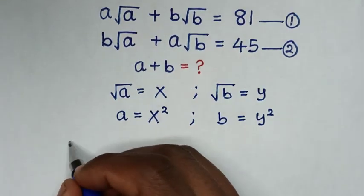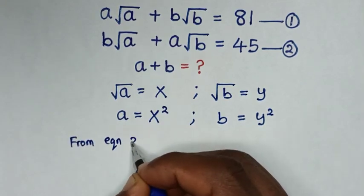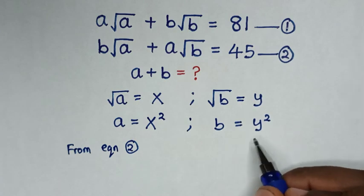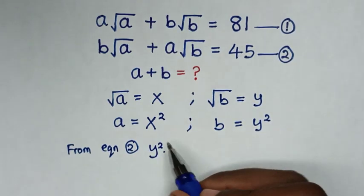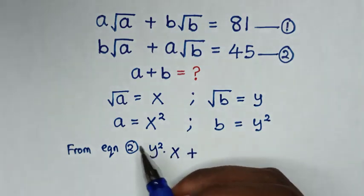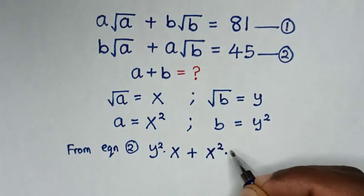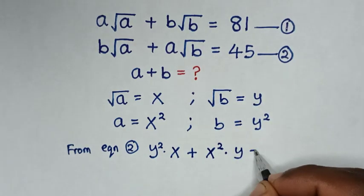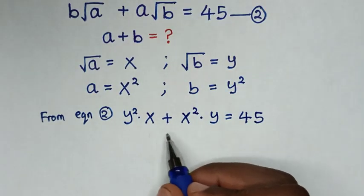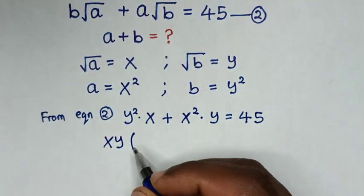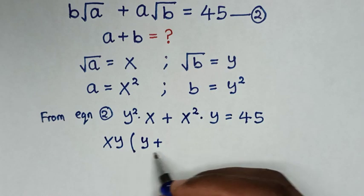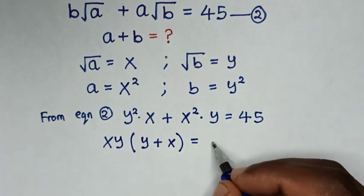Then from equation 2, which is b times square root of a: b is y squared, times square root of a is x. Plus a times square root of b: a is x squared, times square root of b is y, is equal to 45. Then from here, xy is common, so we take xy out of the bracket. It will be xy times (y plus x) is equal to 45. We let this equation 3.